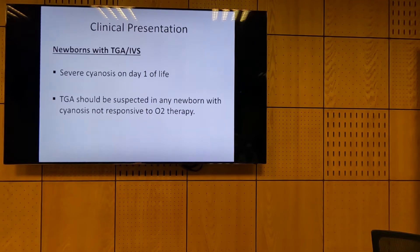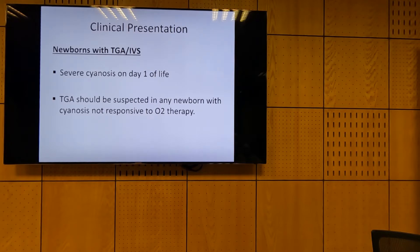Why should you stop oxygen immediately? Because oxygen causes vasoconstriction of the PDA. So in practice, if you have a blue child in the first days of life that does not improve with oxygen, suspect TGA. TGA incidence is not that low.